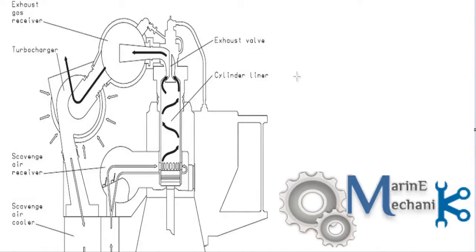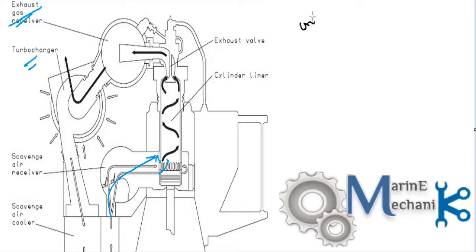Here is the complete arrangement of a two-stroke cross engine showing the scavenging and exhausting diagram. The fresh air — indicated in blue — is the scavenged air that enters through the scavenged ports as the piston uncovers them, then pushes the exhaust gas out to the manifold when the exhaust valve opens. The exhaust gas is expelled to the exhaust manifold or exhaust gas receiver, and then goes to the turbocharger.